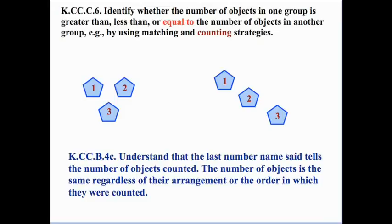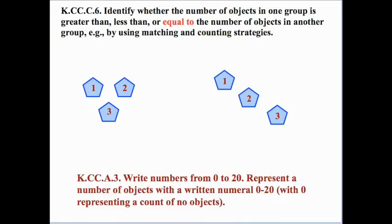What's good about these activities is that we can address other standards simultaneously. For example, standard KCC.B.4c states: understand that the last number name said tells the number of objects counted, and the number of objects is the same regardless of their arrangement or the order in which they're counted. We're doing both here. There's also standard KCC.A.3, which says write numbers from 0 to 20 and represent a number of objects with a written numeral — so we can represent our quantities with the numerals 3 and 3.